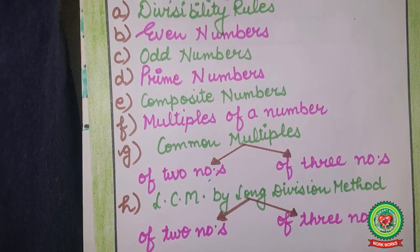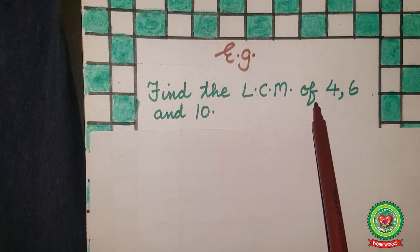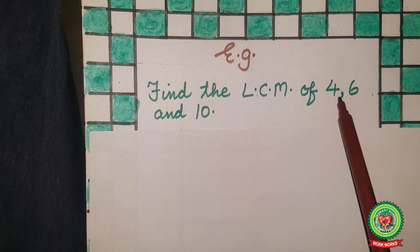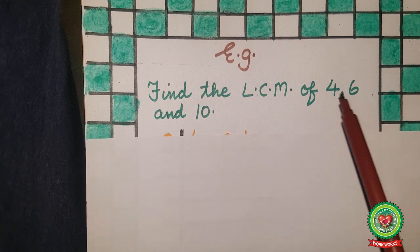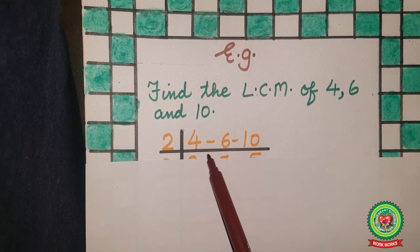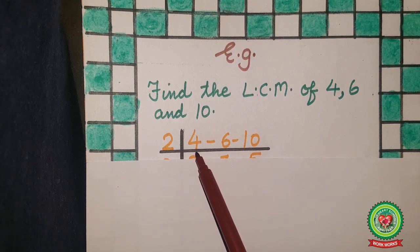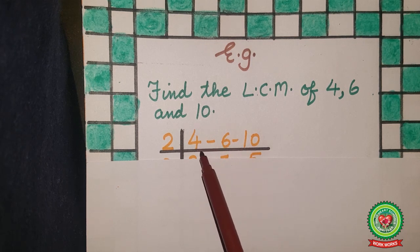To understand this topic, let's take some examples. Example number one: find the LCM of 4, 6, and 10. To find the LCM of three numbers, firstly arrange these numbers in a row. Now divide the numbers by the smallest prime number which divides at least one of the numbers. Since 4, 6, and 10 are even numbers, they are divisible by 2, so we will take 2 as a divisor.